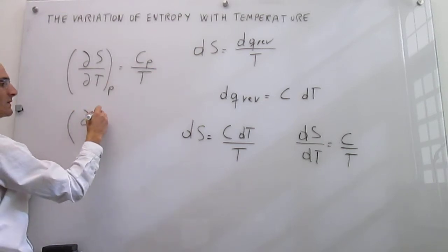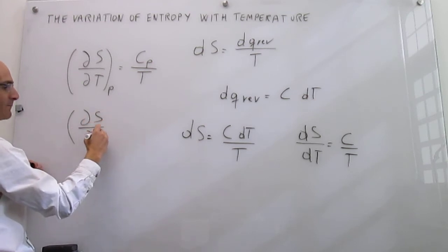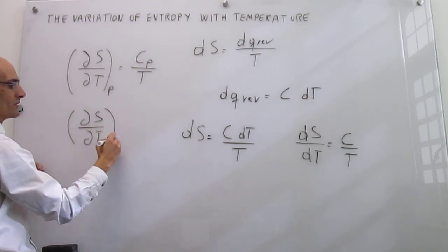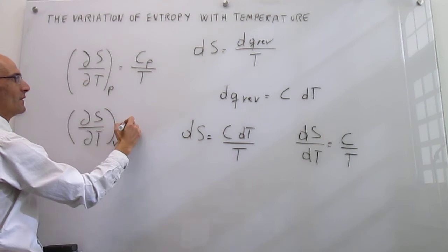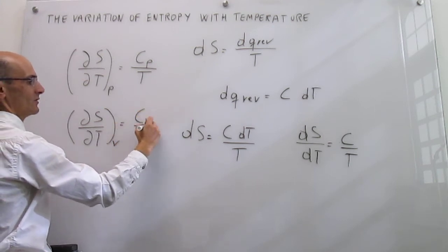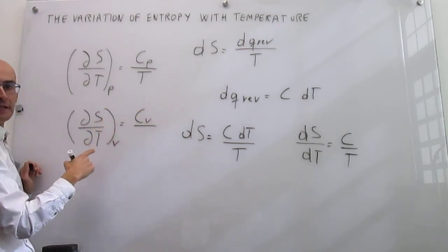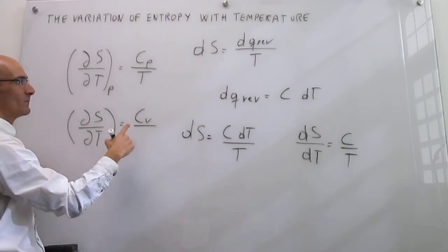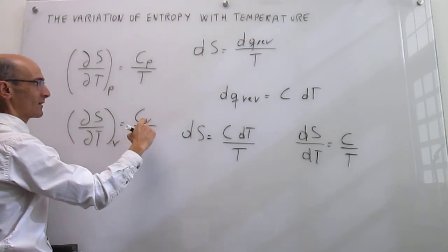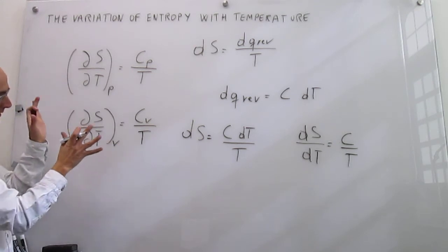But then, if you were to do this in, say, something like a bomb calorimeter, where you're using constant volume, then the idea is that your variation of the entropy with the temperature at constant volume would be just the heat capacity at constant volume divided over the temperature.